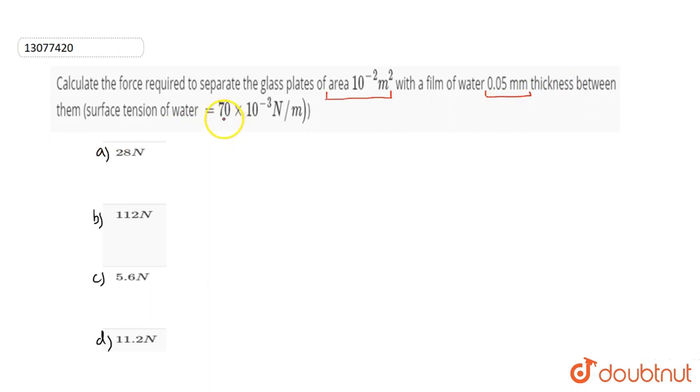Surface tension of water is 70 × 10^-3 N/m. We can see that we have a plate with water molecules present below.